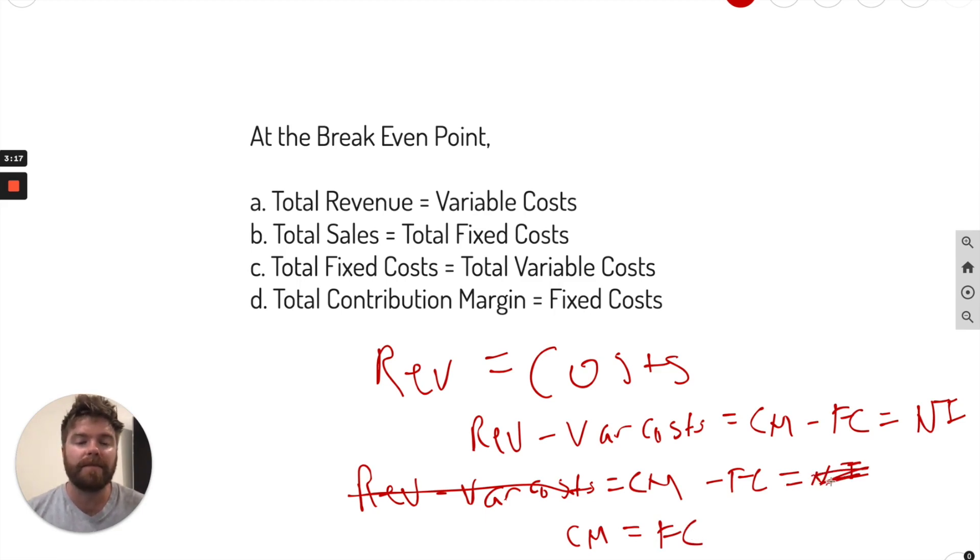We're not looking for net income here because income is the extra amount you get. We're looking to basically have our margins equal our costs, which comes out to be zero in net income. That's break-even. So really what we need is to have our margins equal our fixed costs. So revenue equals variable costs is wrong. Sales equals fixed costs is wrong. Total fixed costs equals total variable costs makes no sense. Contribution margin equals fixed costs, which is what we have here. And this will make more sense as we practice more problems. Let's go in and actually practice with some numbers.